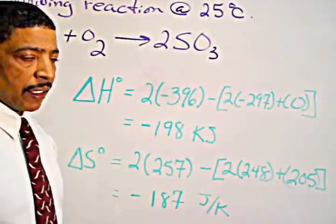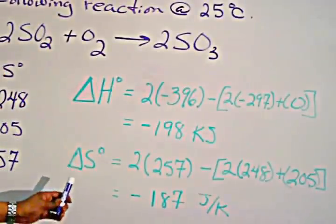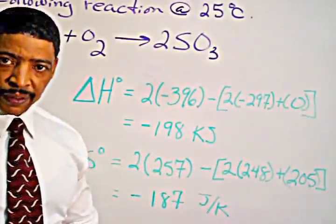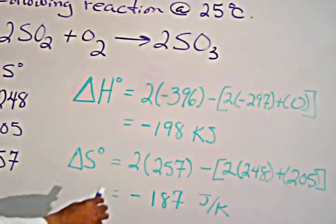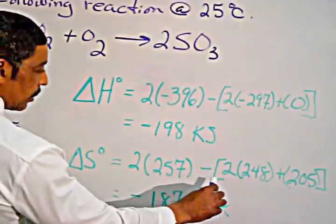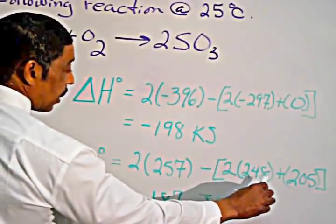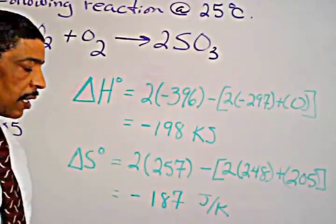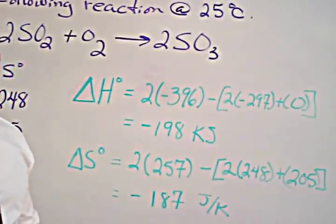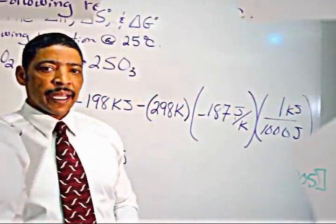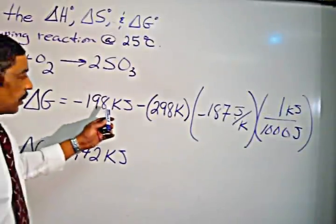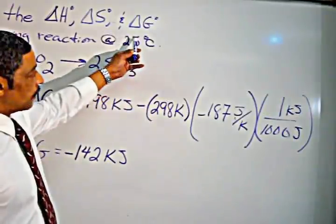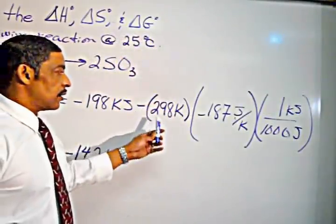The entropy may now be calculated in a similar fashion, where entropy is equal to the sum of the entropies of the products minus the sum of the entropies of the reactants. In this case, 2 times 257, minus 2 times 248 plus 205, which gives a final value of negative 187 joules per degree Kelvin. The delta G may now be calculated by substituting the values for delta H and delta S, and converting temperature where 25 degrees Celsius is written as 298 K.